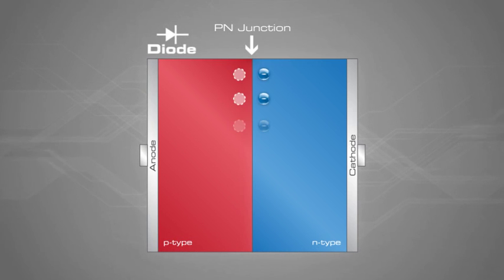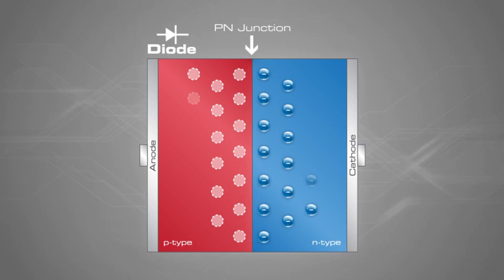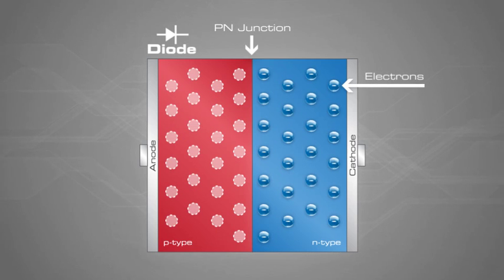A basic p-n junction creates a diode that allows electricity to flow in one direction but not the other. We can see in the diode that the n-type material has free electrons, and the p-type material has holes near the p-n junction.